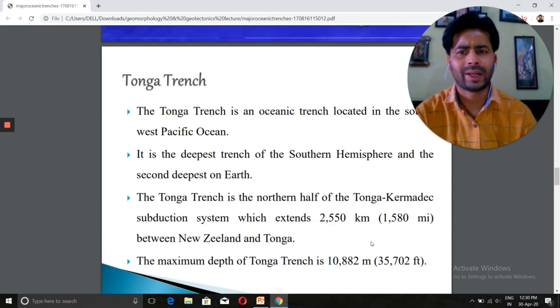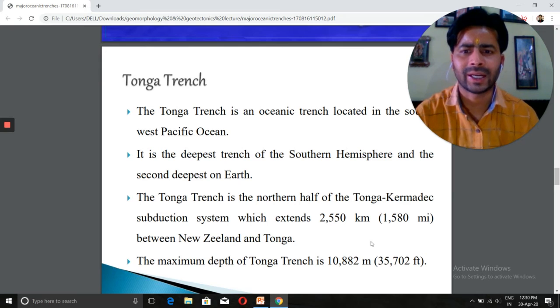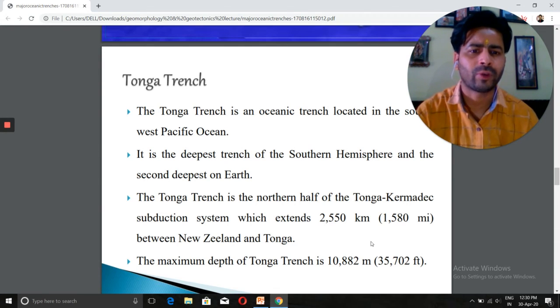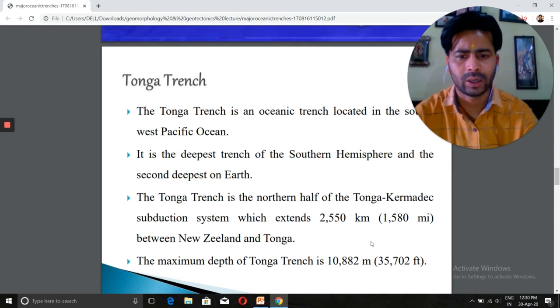The Tonga Trench is an oceanic trench located in the southwest Pacific Ocean. It is the deepest trench of the Southern Hemisphere and is the second deepest on earth. The Tonga Trench is the northern half of the Tonga-Kermadec subduction system which extends 2,550 kilometers. It is about 10,820 meters in depth.